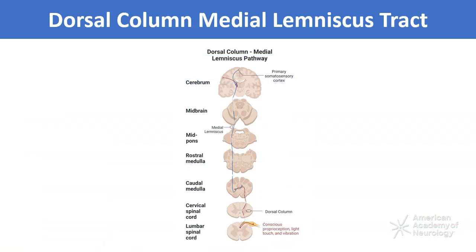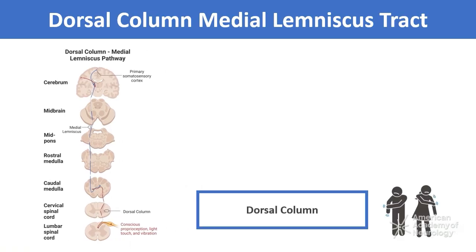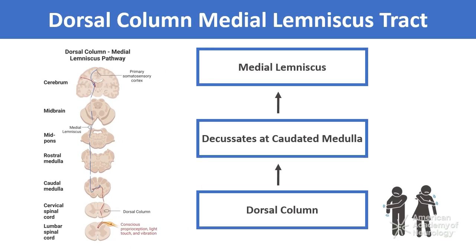The dorsal column medial lemniscus pathway informs the brain about conscious proprioception, light touch, and vibration. This pathway travels through the spinal cord's dorsal column and the brainstem's medial lemniscus. It decussates at the caudal medulla in the internal arcuate fibers before terminating in the primary somatosensory cortex.